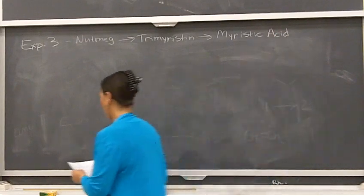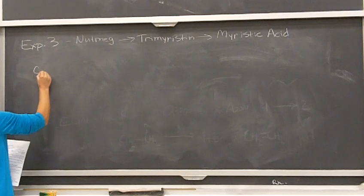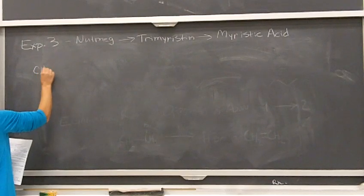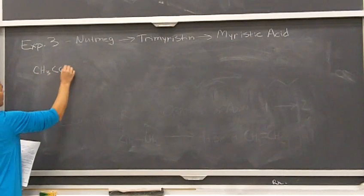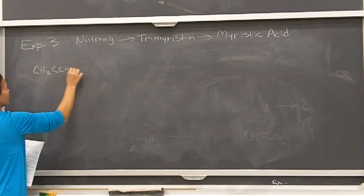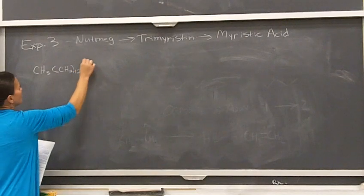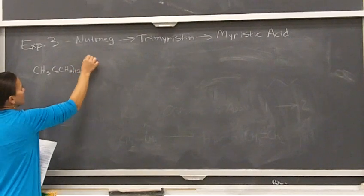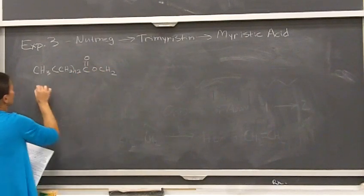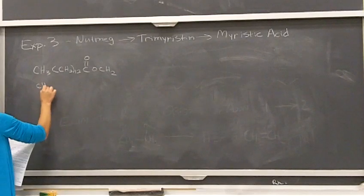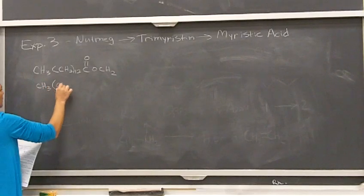So trimeristin — this is its structure. There's a lot of carbon and hydrogen involved.